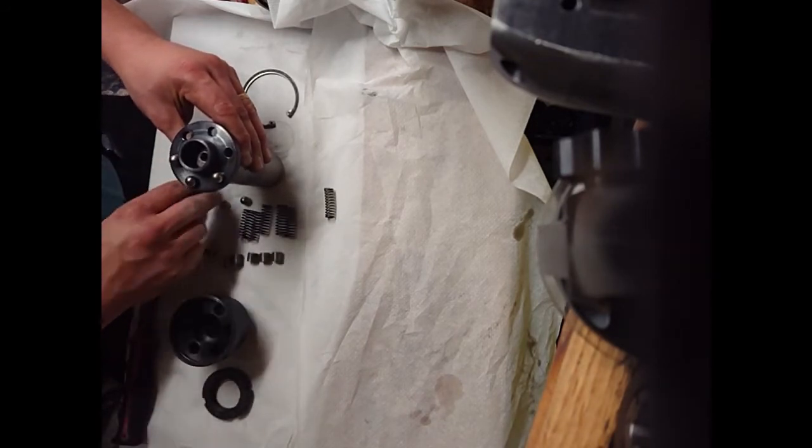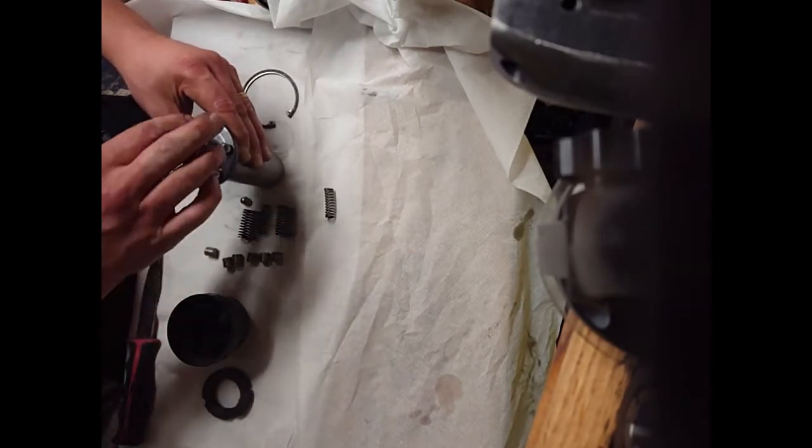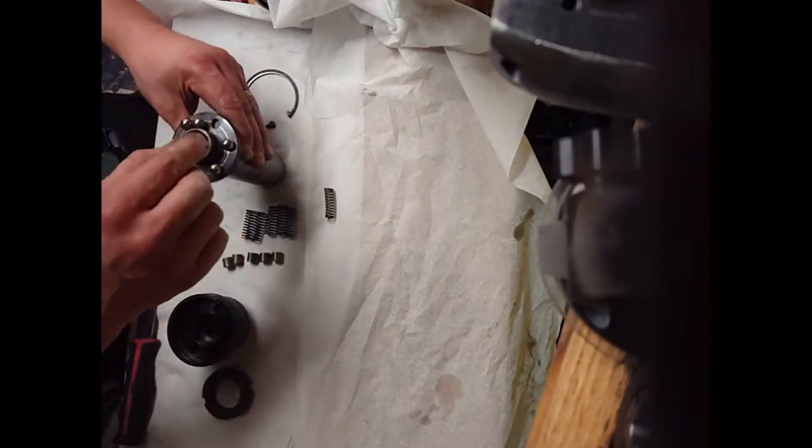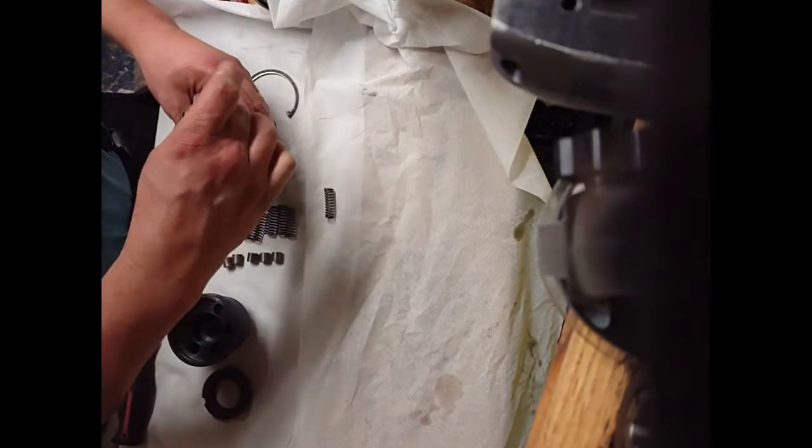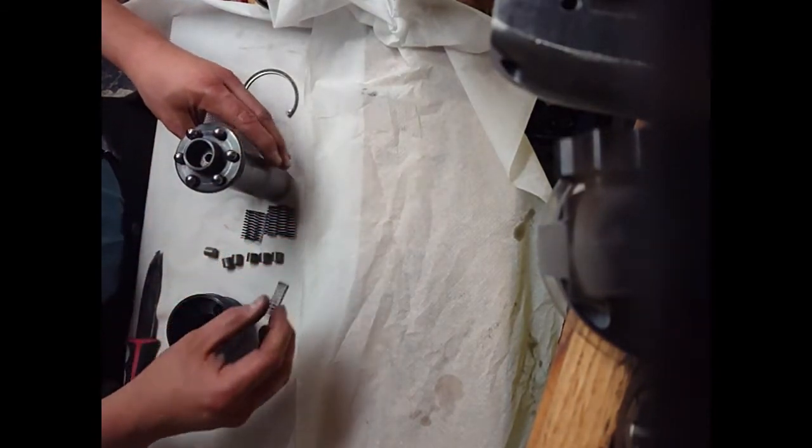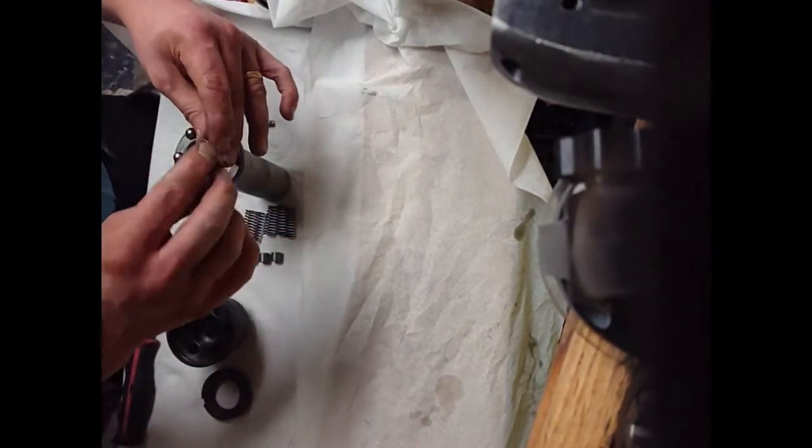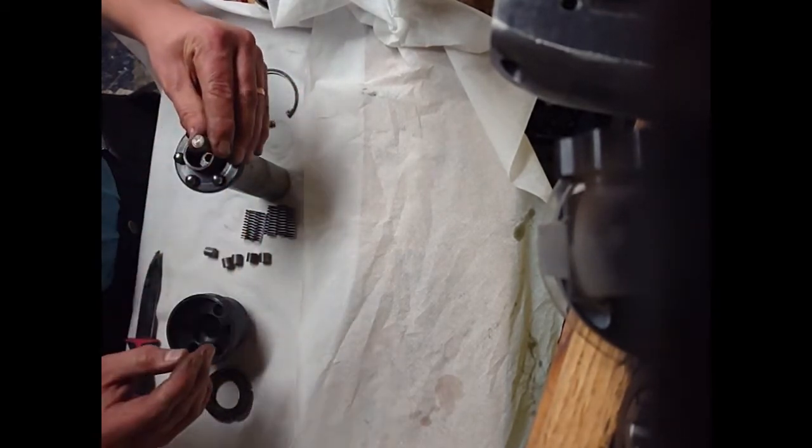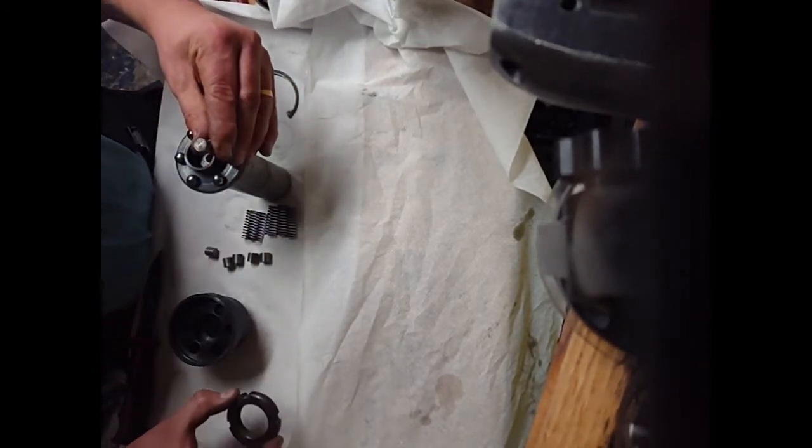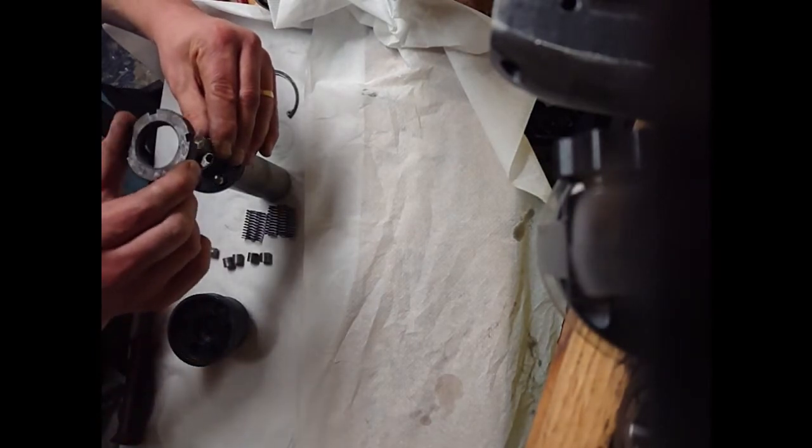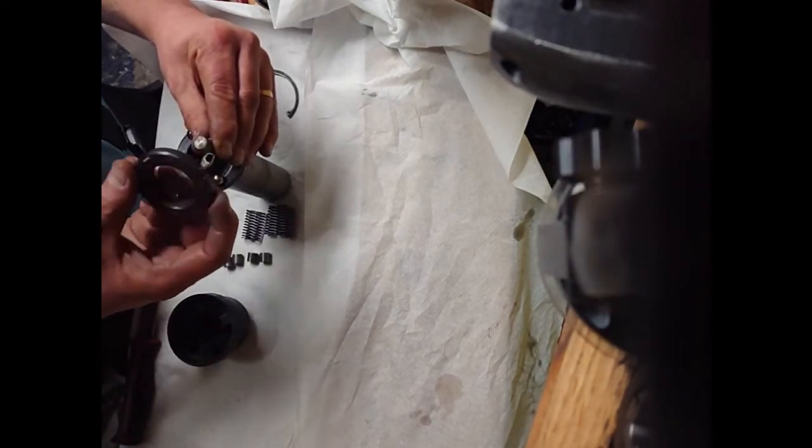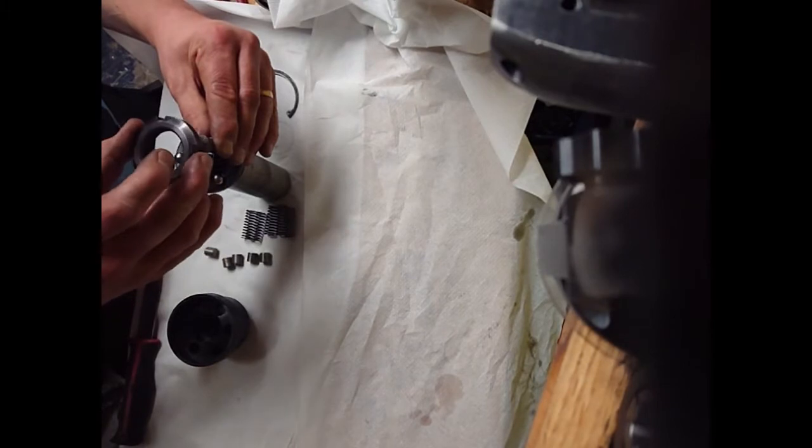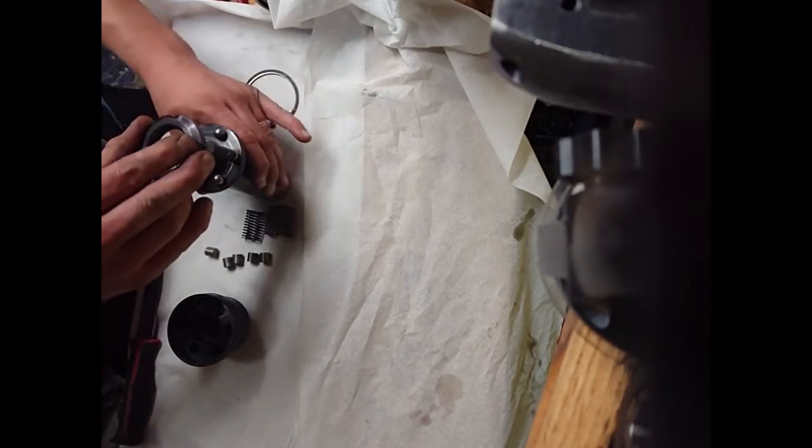The torque is transmitted by these balls located in these dents, and they are loaded by springs sitting on top with a plunger. This plunger is forced down by this pressure nut which is adjustable from outside.